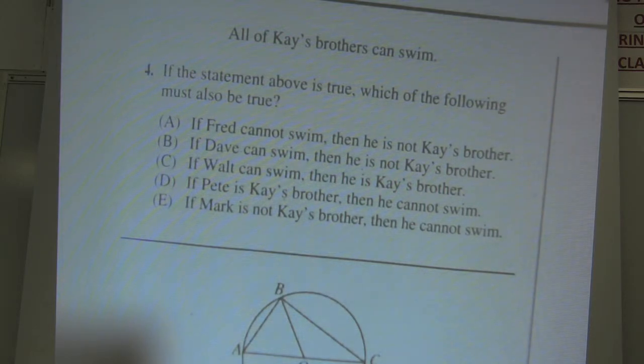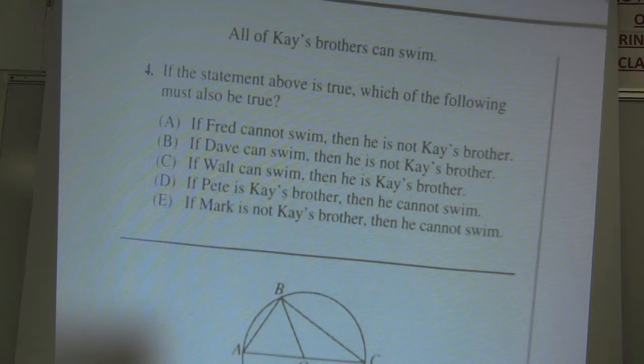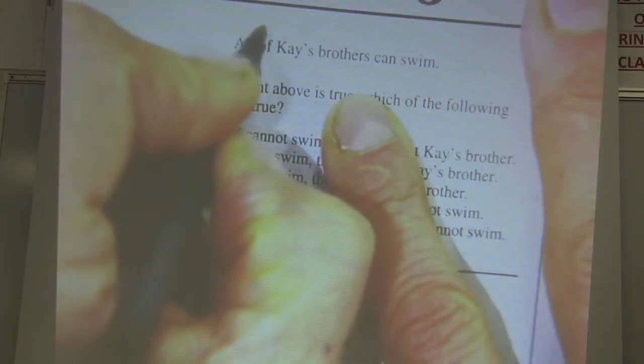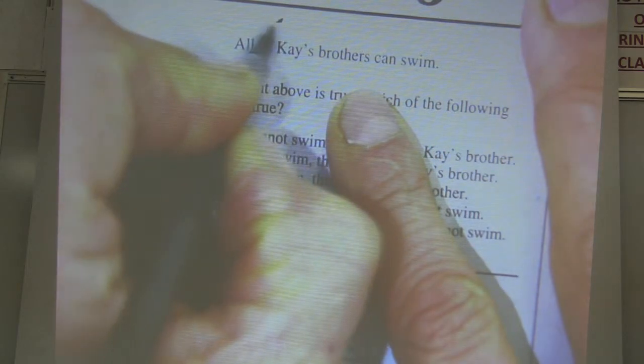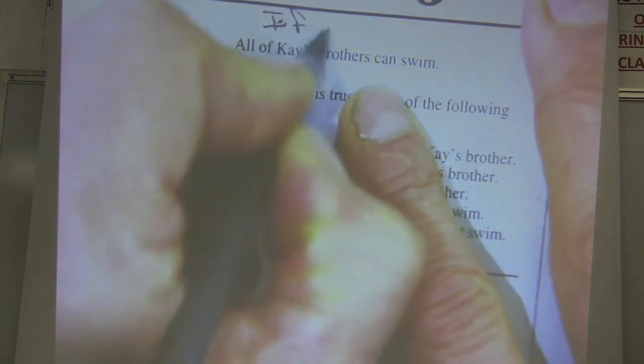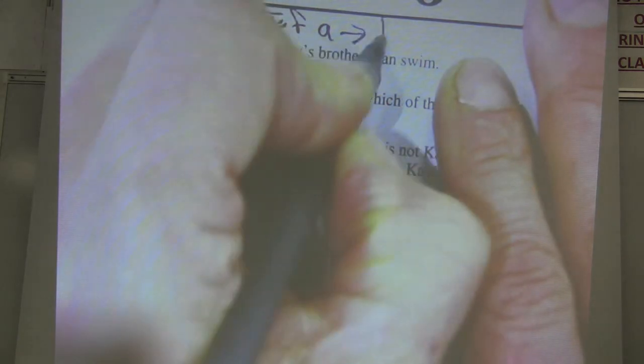These are still reasonably easy, and they're going to start progressively getting harder. We have the statement, all of K's brothers can swim. This is a conditional statement thing from geometry. So what I would do is I would write it like this: If A, then, and arrow means then, then B.